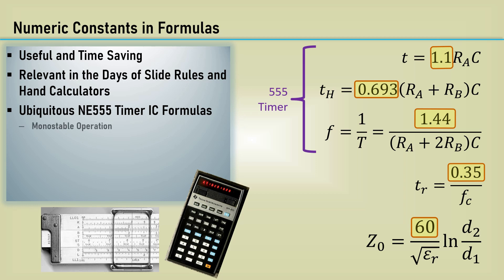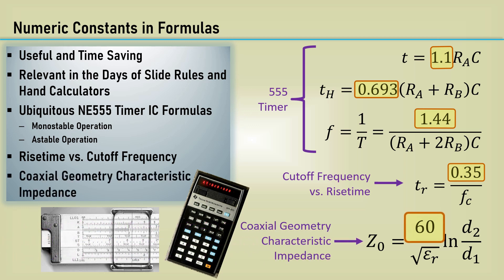We will look at a 555 timer's monostable and astable modes of operation. Another fundamental formula with a numeric constant is the relationship of the cutoff frequency of a low-pass system versus the rise time of an input square wave. Turns out we can use the same method to detail this constant as with the 555 astable operation. We will also look at where the mysterious looking number 60 comes from in the formula for the characteristic impedance of a coaxial structure.